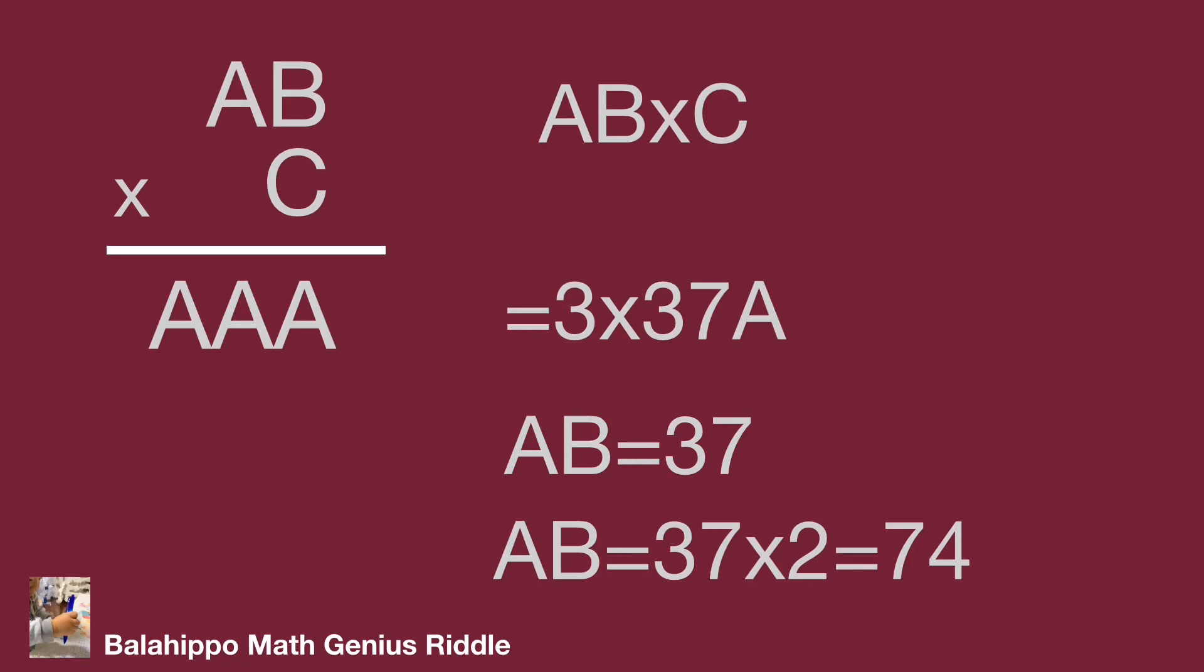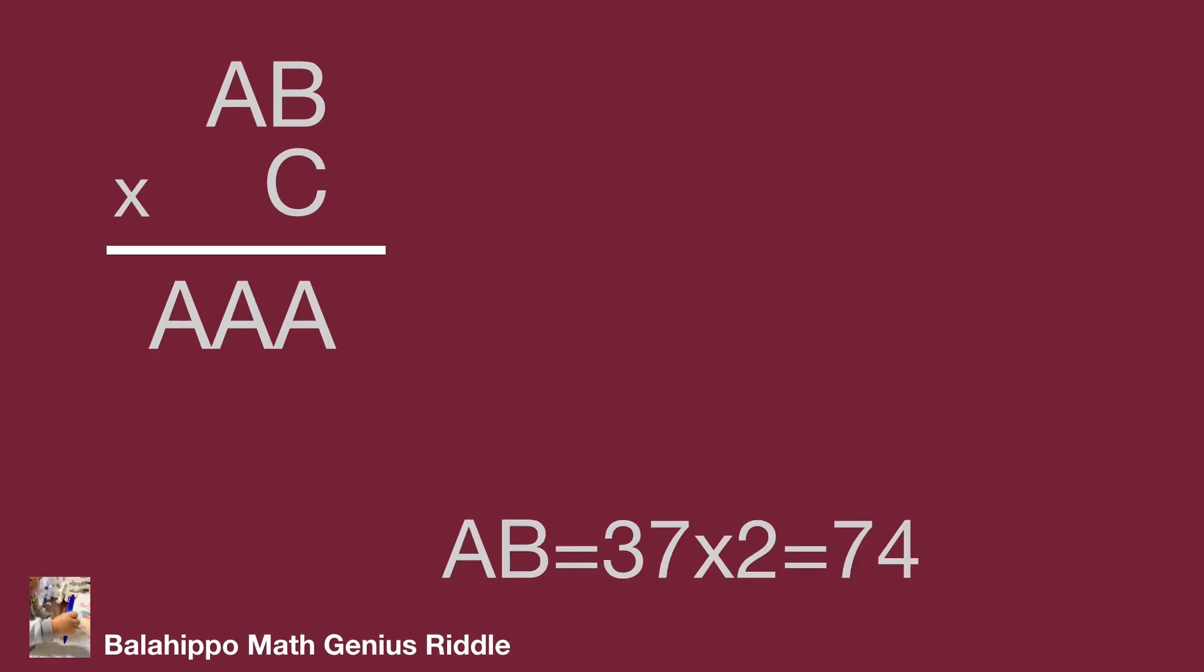Let's check each one. While AB equal to 74, the question is 74 times C equal to 777. Then the answer C is not integer result. It's not the answer.